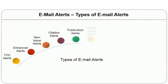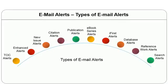Types of email alerts include table of content alerts, enhanced alerts, new issue alerts, citation alerts, publication alerts, e-book series alerts, IFEST alerts, database alerts, reference work alerts, and search alerts. There could be more types, but these are the most common ones.